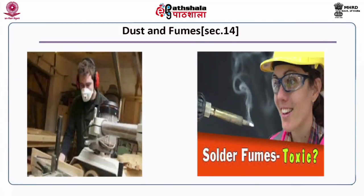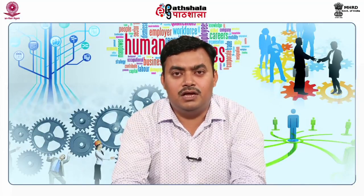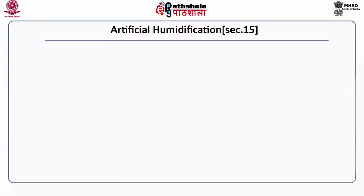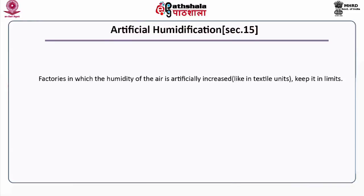Under Section 14, dust and fumes: effective measures should be taken to prevent inhalation or accumulation of dust and fumes. If any exhaust appliance is necessary, it shall be applied as far as possible to the point of origin of the dust, fume or other impurity. Under Section 15, artificial humidification: in factories where the humidity of the air is artificially increased, such as textile units, it should be kept within limits and the water used for artificial humidification should be kept clean.